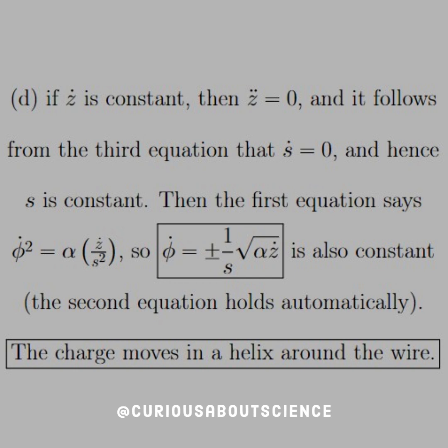If s dot equals zero, then that implies s is a constant. Just integrate zero, or take the derivative of a constant and you get zero. Then the first equation says that if s is constant and s dot is zero, phi dot squared equals alpha times z dot over s, because we divide it through and solve for phi dot.